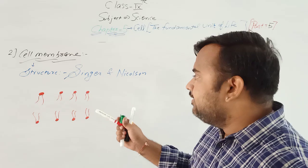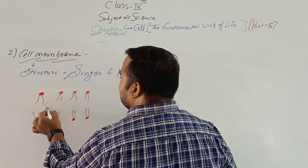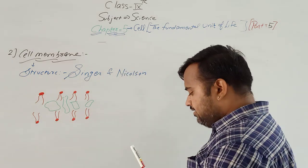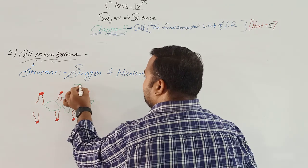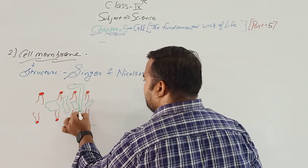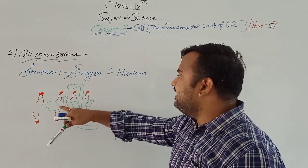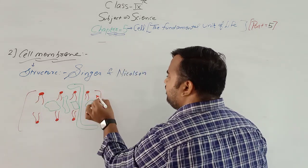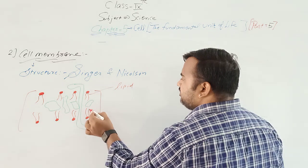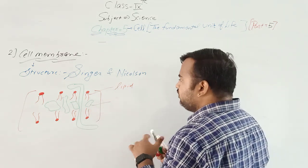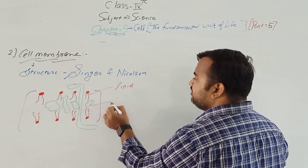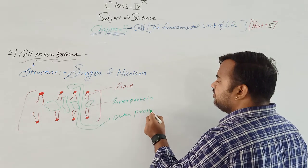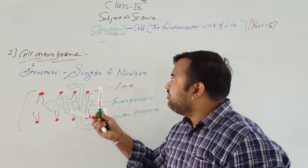The cell membrane is a lipid layer — a fat layer. Some proteins are also present. There are two types of proteins: integrated proteins, which are inner proteins embedded in the membrane, and outer proteins present on the outer layer. This is the structure of the cell membrane as given by Singer and Nicolson.